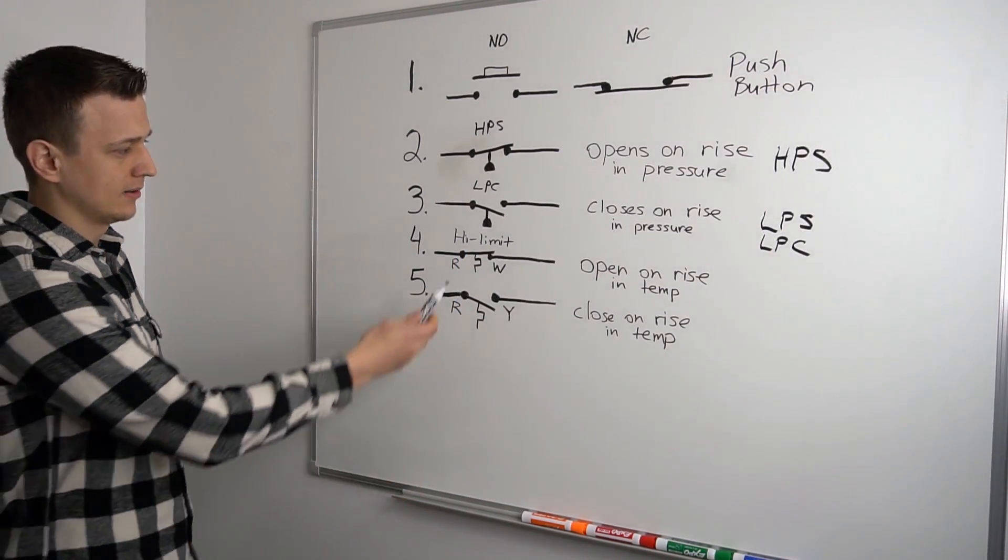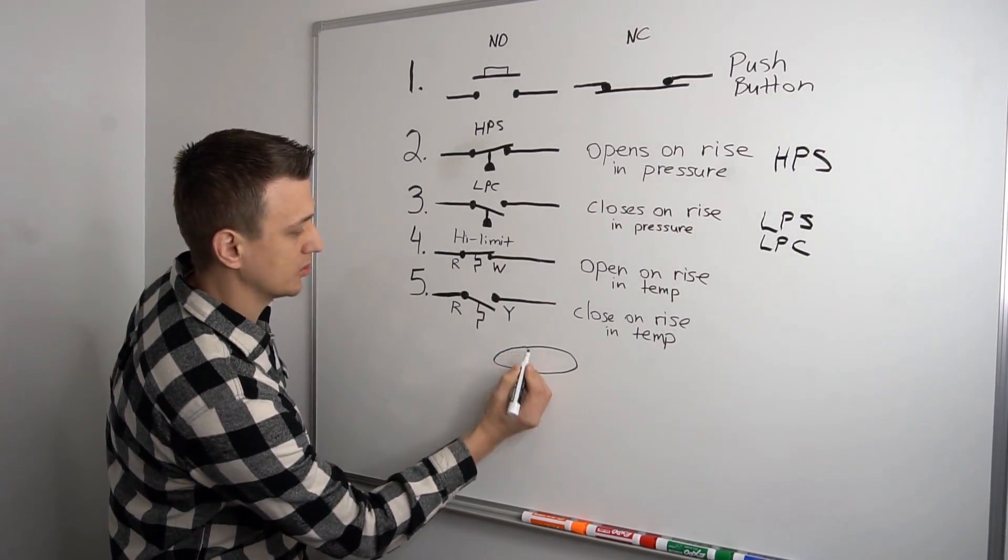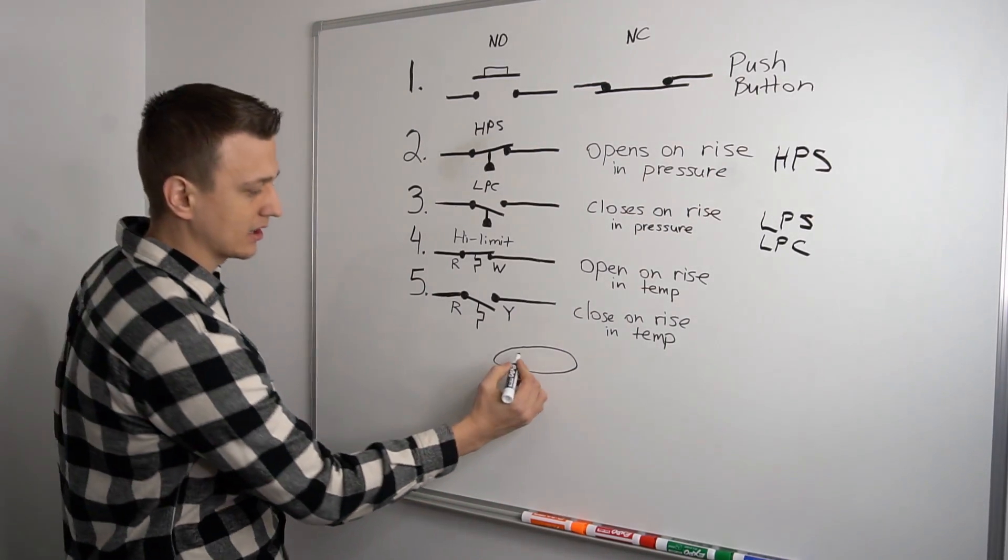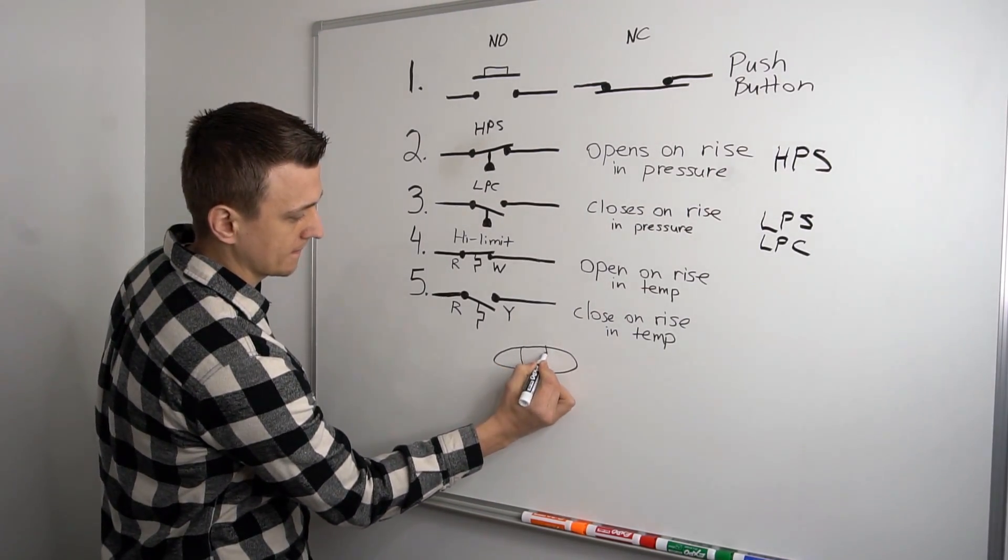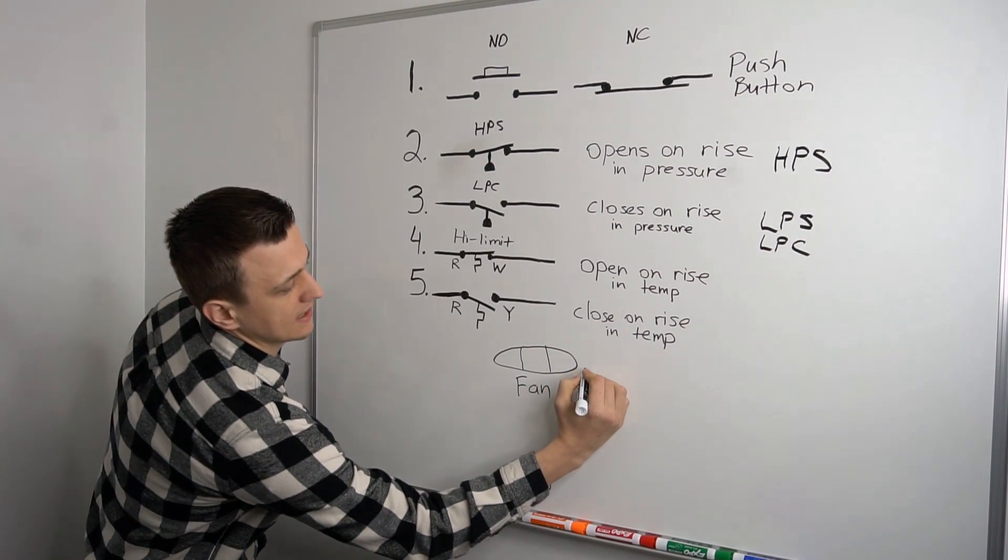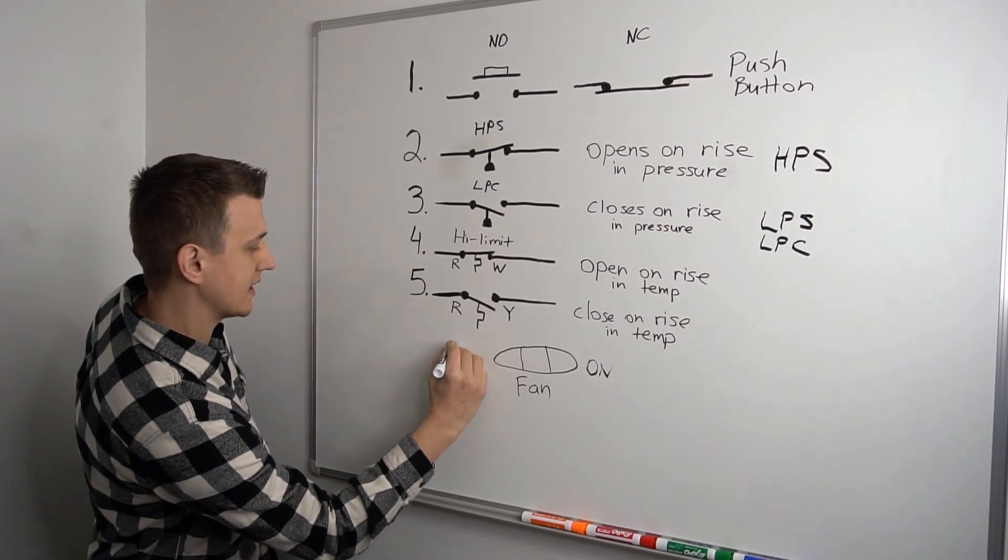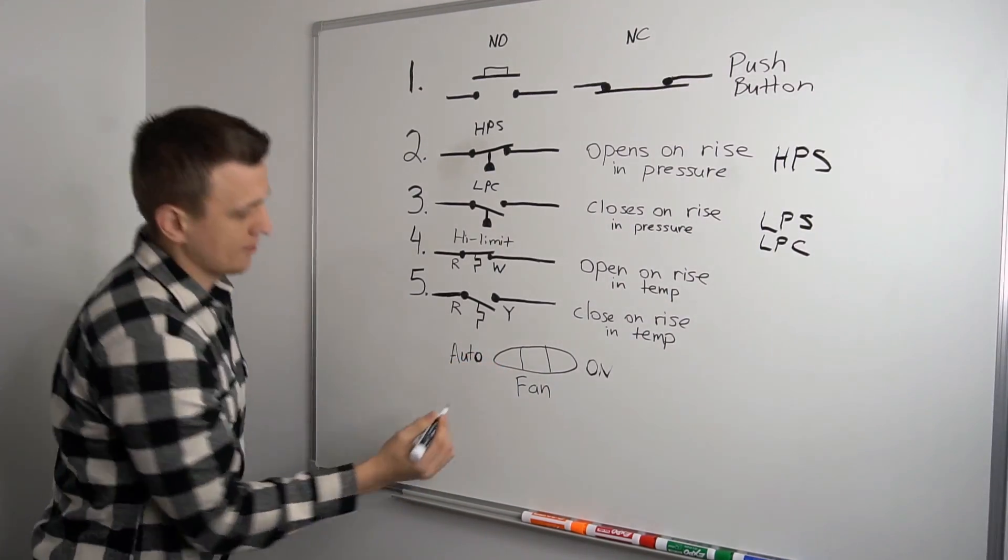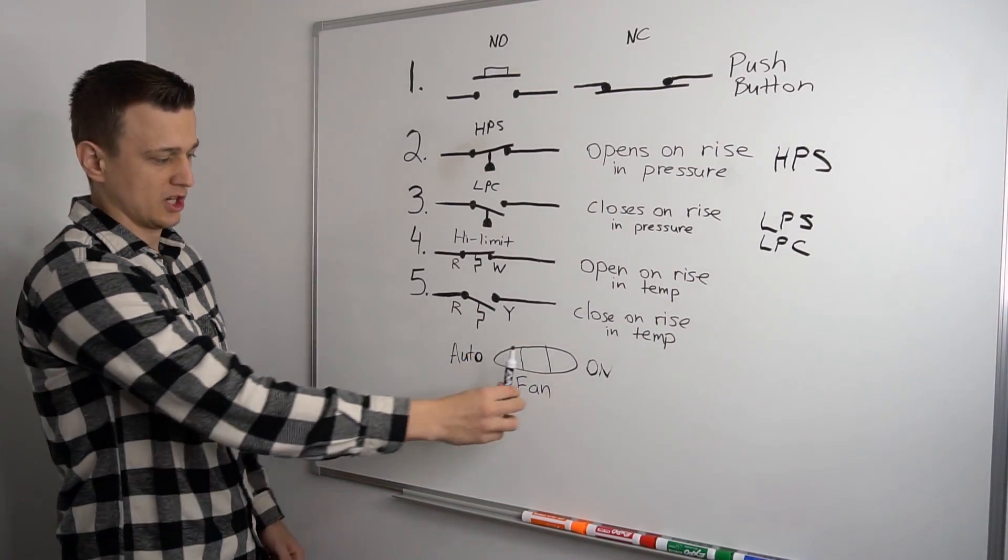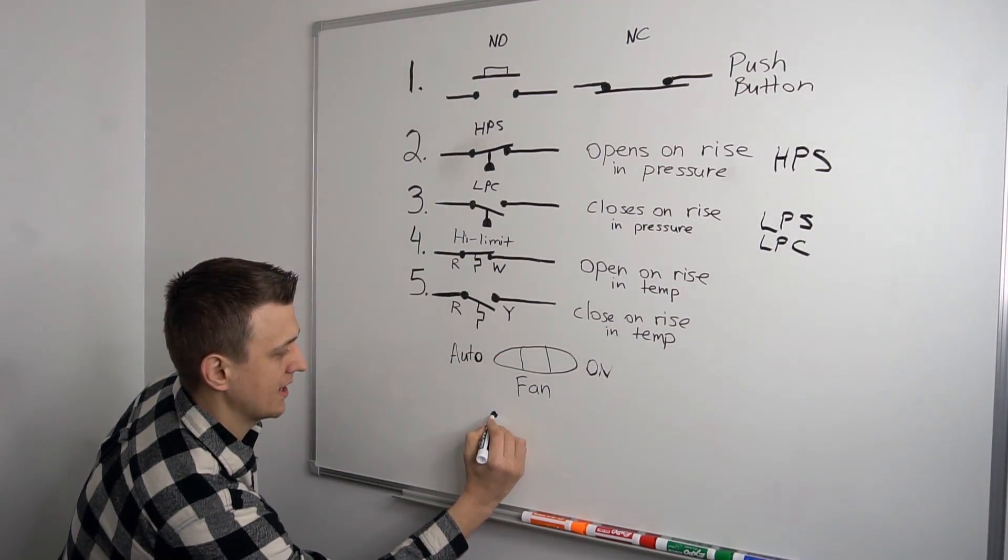And since we're talking about the thermostat, we've got the heating, we've got the cooling. If we look at the fan switch on most basic digital thermostats, you've got the fan switch, right? So let's call this fan. This would be a two position switch, like we saw in the previous whiteboard drawing. This one would be usually on or auto. Sometimes they're on different sides.